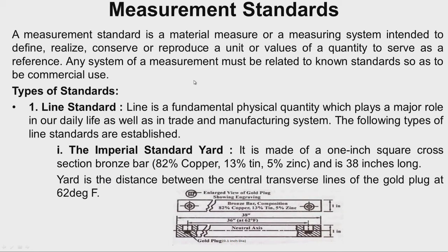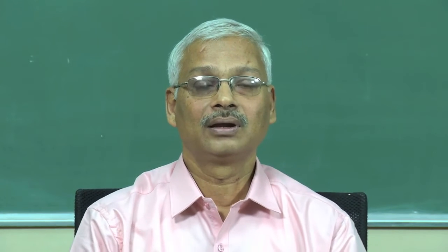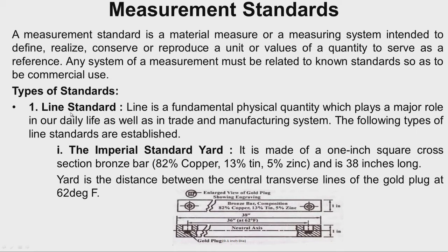Coming to measurement standards, the International Organization for Standardization is responsible for establishing and maintaining the standards. They are also responsible for calibrating other secondary and tertiary standards by comparing those with primary standards, with the help of its various technical committees. There are different kinds of standards: material standards and wavelength standards. Under material standards we have line standard and end standard.